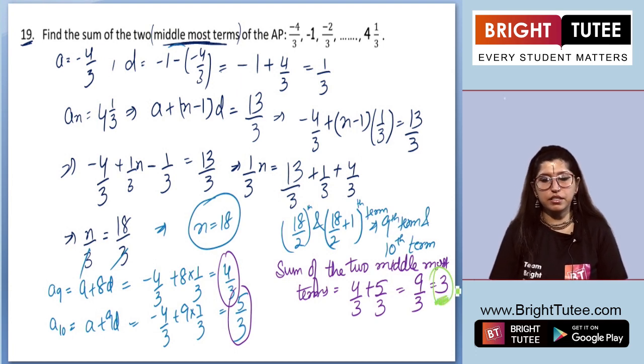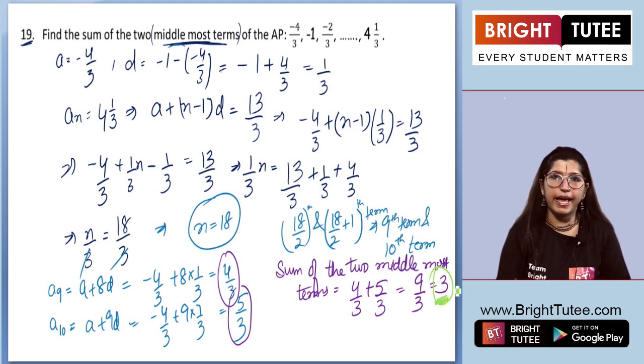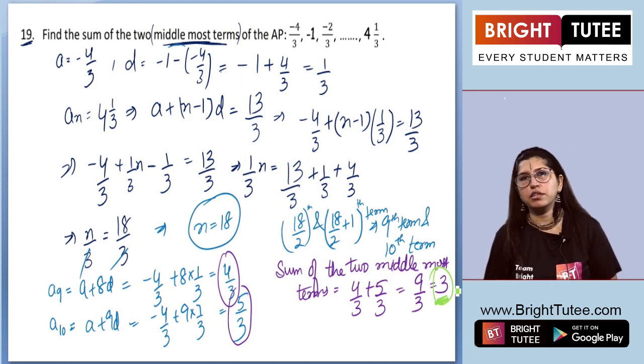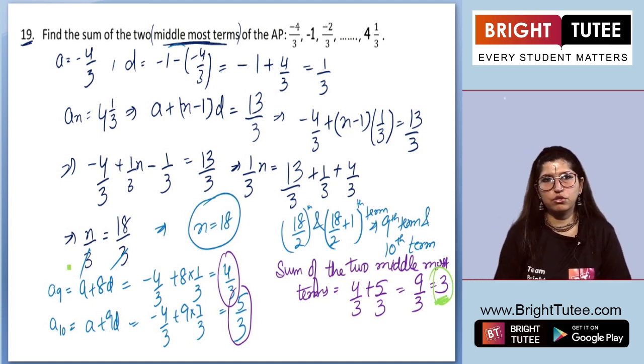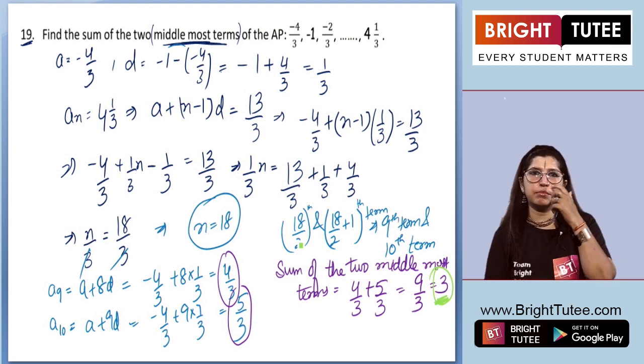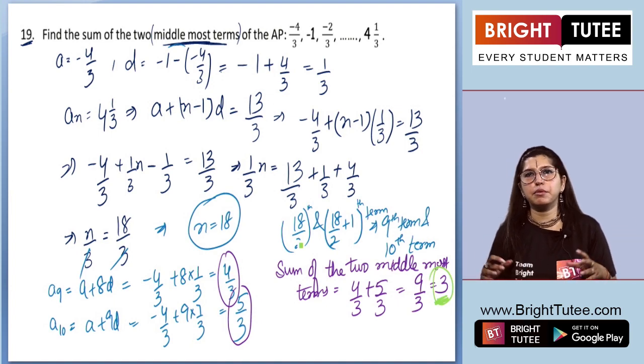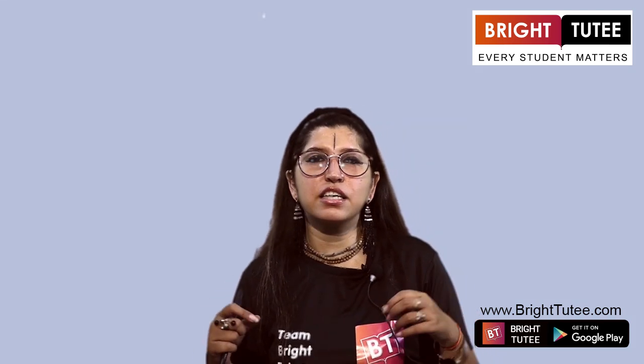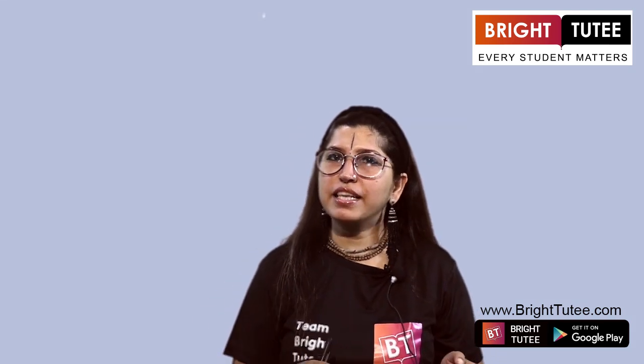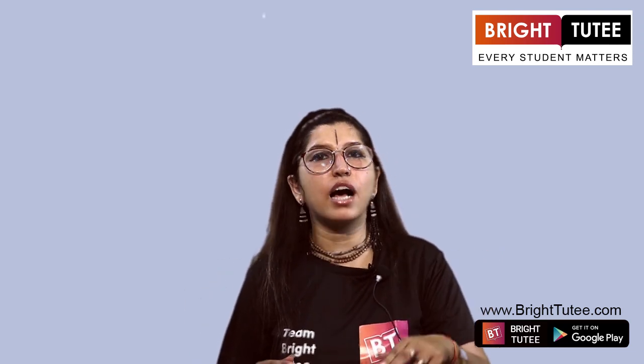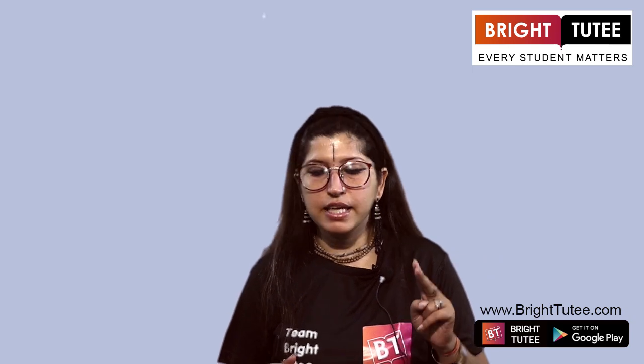Why? What we did is, we started with finding N, because until and unless we don't know how many terms are there, we cannot check out what are the two middle terms or one middle term of this AP which we have. Then we do 18 by 2 because the middle most terms will be 18 by 2, 9th term and 10th term. But students actually add 9 plus 10, which is 19, as the final answer. So we don't have to do that. It's 9th term and 10th term. So we are finding 9th term and 10th term, adding both of them up. Then only we can get the final answer which they asked for, that we need to find the sum of two middle most terms.